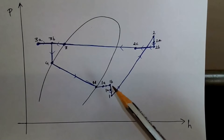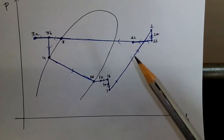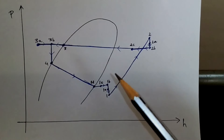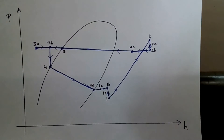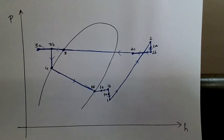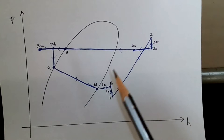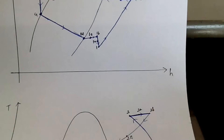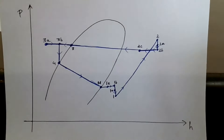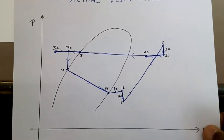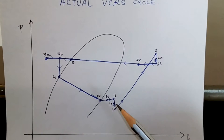From 1c to 1b there is heat gain in the suction line. The temperature in the suction line is low while the outside temperature is high, so heat flows from outside to inside. As a result, temperature increases from 1c to 1b.